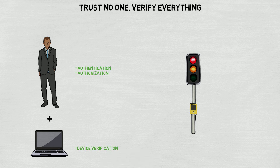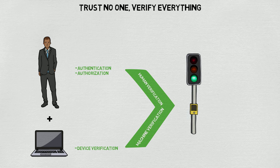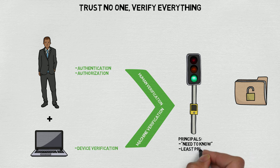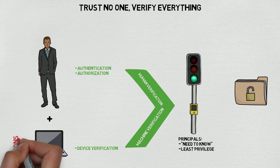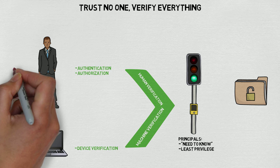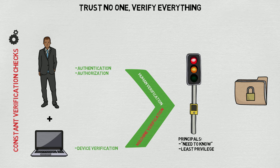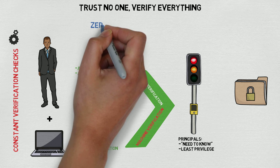Once trust has been established through the verification process, we now have access to the resource we requested and nothing else. Because Zero Trust Security is built around the concept of need-to-know, I would only have access to the resource that I need and nothing else until the new request goes through the same process. In a Zero Trust Security model, the network is in a constant, dynamic state of verifying users and devices. This means that if a verified user is compromised, the machine verification would fail and their access to the resource would be immediately cut off.